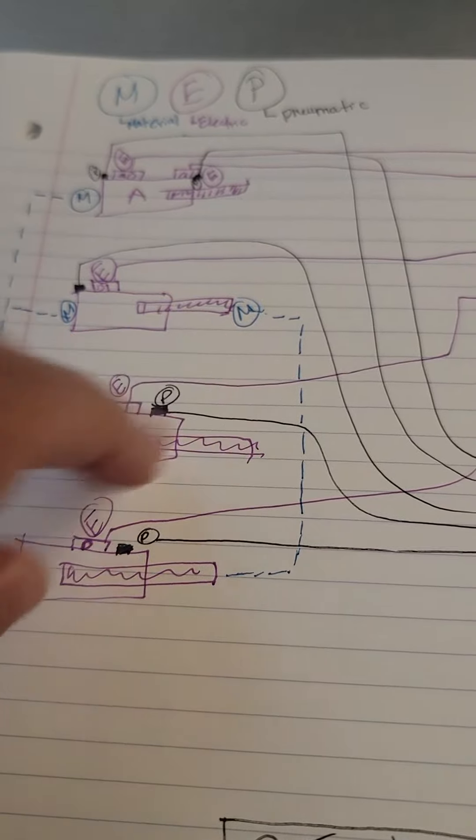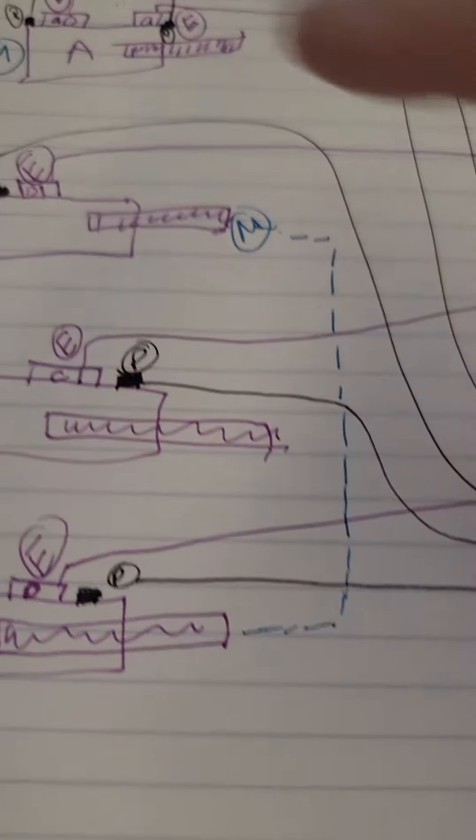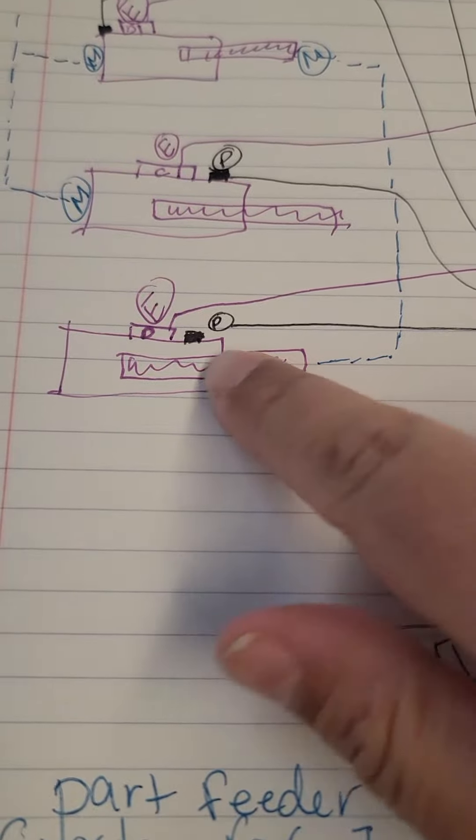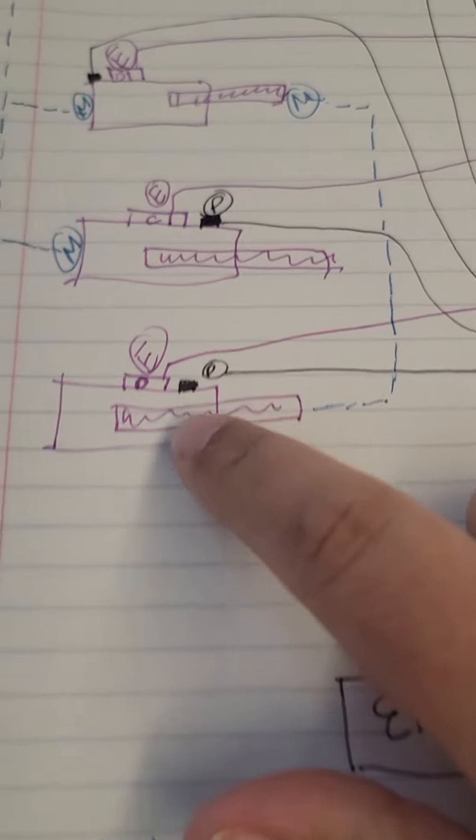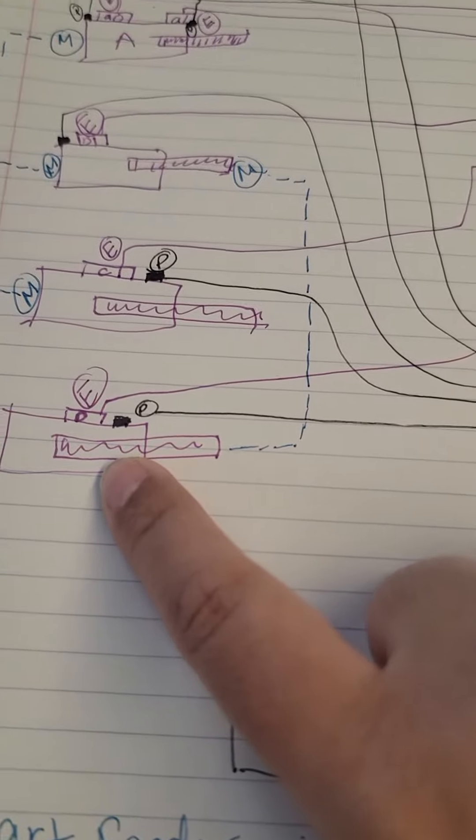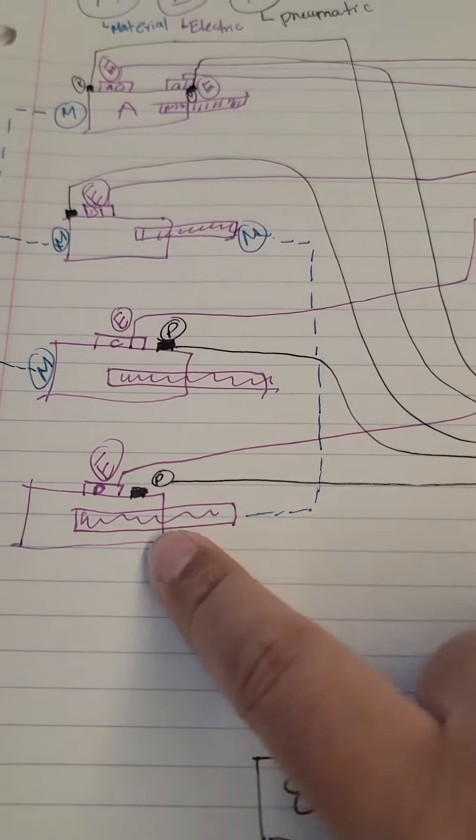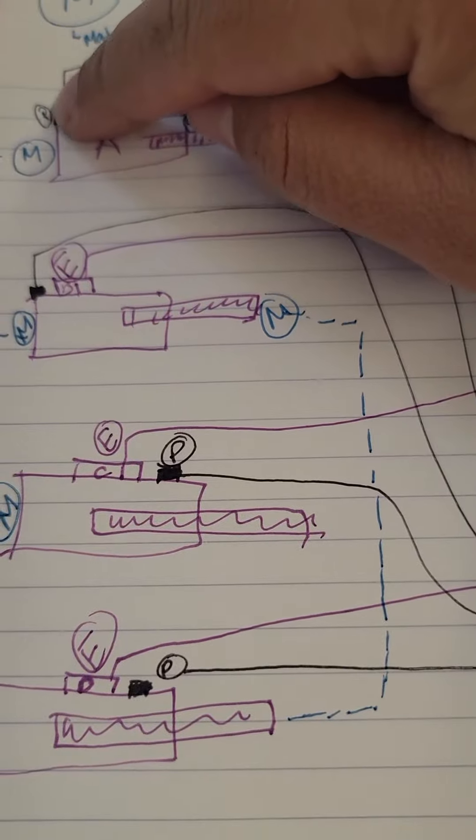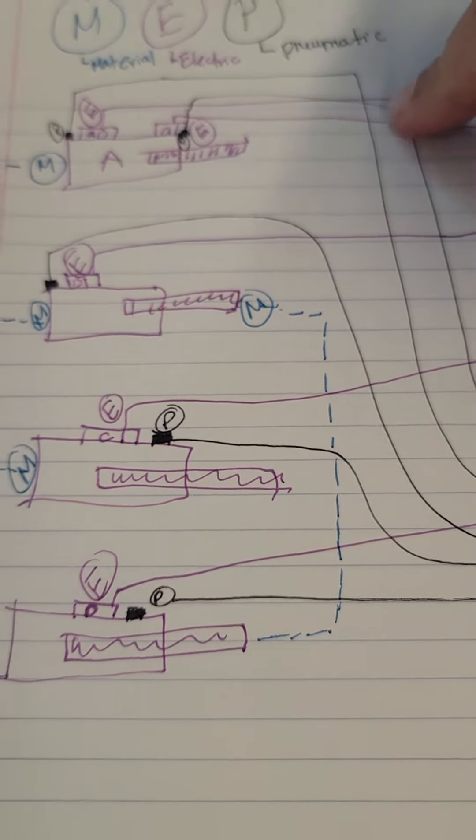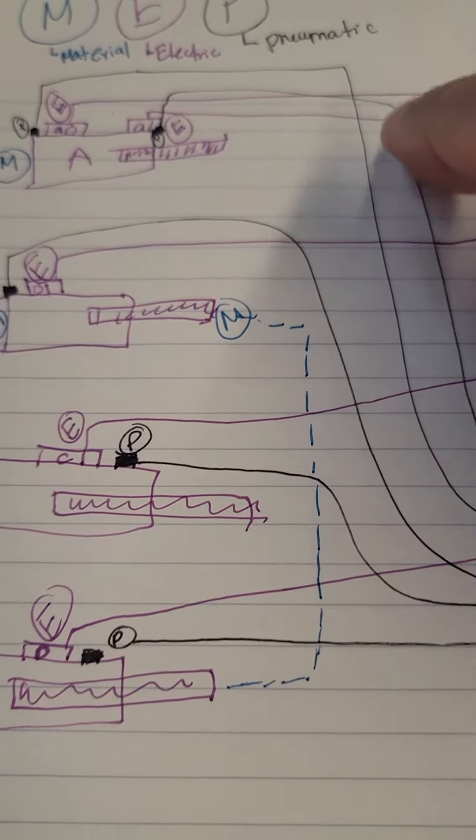And then from there, B moves the material into the final stage in this final single acting cylinder E. And then here we have pneumatic air that pushes the cylinders out.